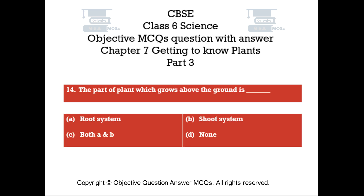Question number 14. The part of a plant which grows above the ground is. Option A: Root system. Option B: Shoot system. Option C: Both A and B. Option D: None.